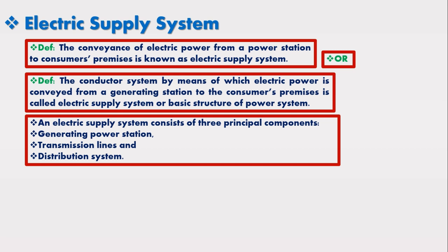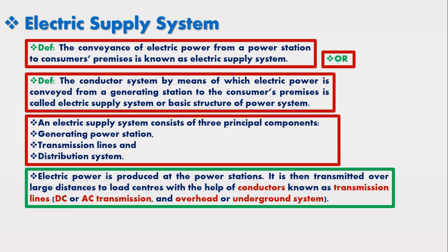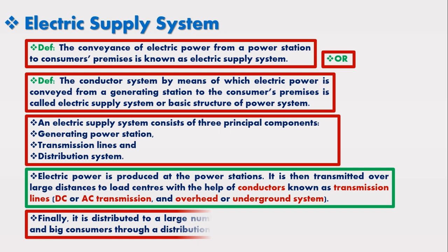Electric power is produced at the power station. It is then transmitted over large distances to load centers with the help of conductors known as transmission lines. The transmission lines may consist of DC or AC voltage, overhead or underground system. Finally, it is distributed to a large number of small and big consumers through a distribution network.